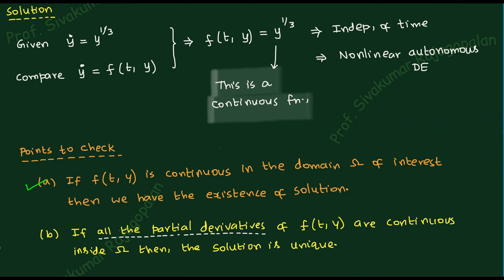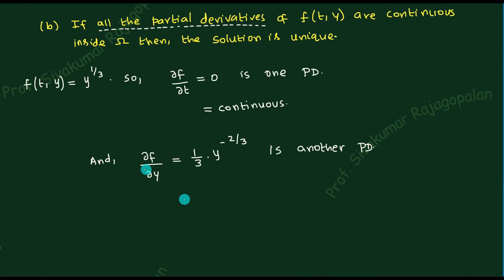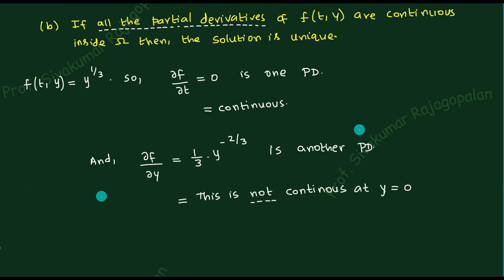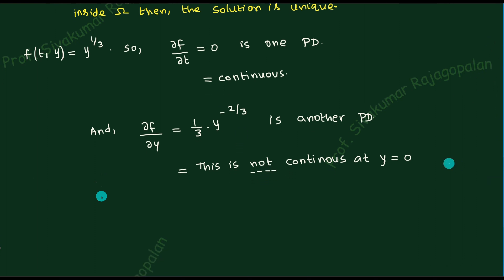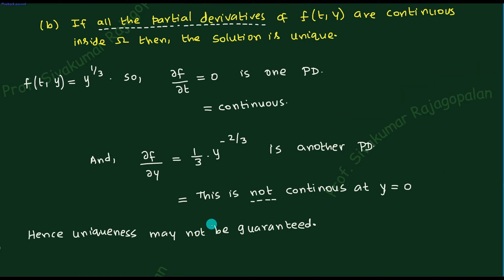There are two partial derivatives. Now you have to determine whether the partial derivative ∂f/∂y is a continuous function or not. The conclusion is that it is not a continuous function, especially at y = 0. Outside y = 0 there is no problem, but at y = 0 there is trouble, and once there is trouble, we conclude it is not continuous.